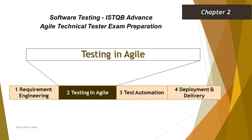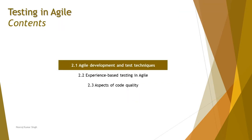Hello friends and greetings for the day. Welcome back to another tutorial on ISTQB Advanced Agile Technical Tester. We are in chapter 2, where we have three major topics: 2.1 Agile Development and Test Techniques, 2.2 Experience Based Testing in Agile, and aspects of code quality.